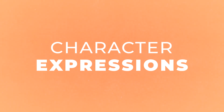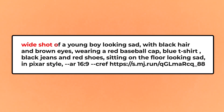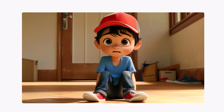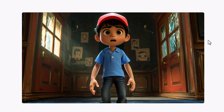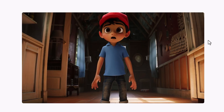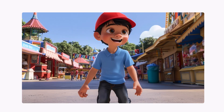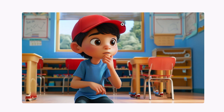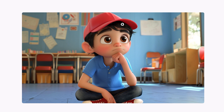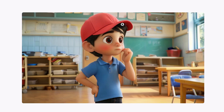Now let's have a look at changing character expressions. For this one, I wanted to create a sad expression, so I put a wide shot of a young boy looking sad, and reiterated sitting on the floor looking sad at the end as well. Here is our character with a sad expression and they came out looking really good. Here's the character looking scared in a haunted house, having a good laugh at a theme park, and thinking in a classroom — for that prompt I added in to have his hand on his chin for that classic thinking pose, and it did a pretty good job.